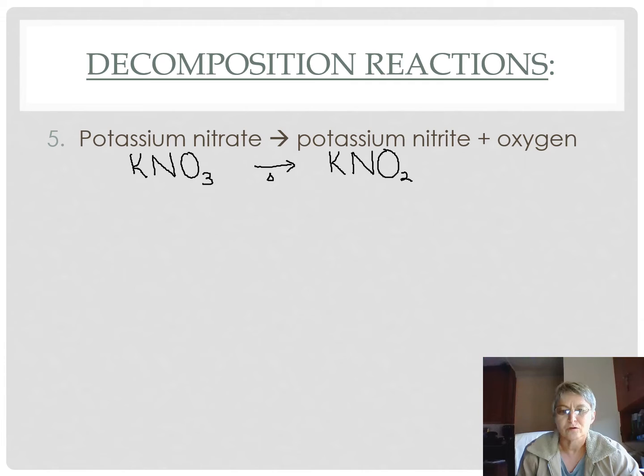then it forms potassium nitrite where potassium has joined to nitrogen that has two oxygens joined to it. So the nitrite is NO2 and it forms oxygen and oxygen is diatomic.